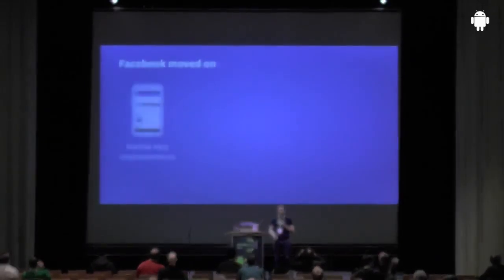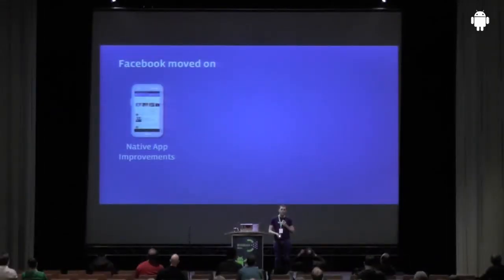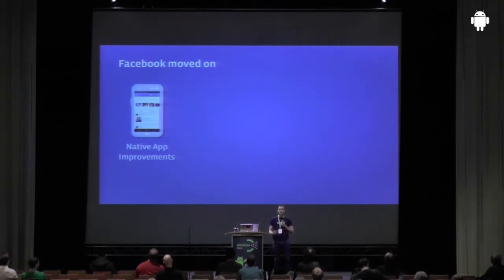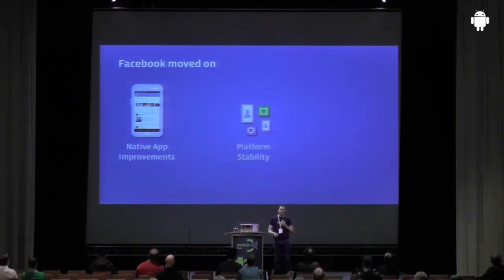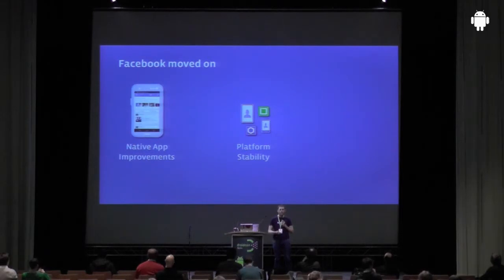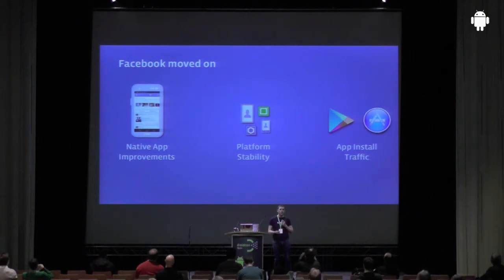Facebook moved on as well. We improved our native apps on both iOS and Android, improved the performance, ripped out a lot of the web views and replaced them with native views. We put a lot of work into the platform — improved stability, performance for mobile app developers, speed and reliability. And then we started sending a lot of traffic to the app stores on both Google Play and iOS.